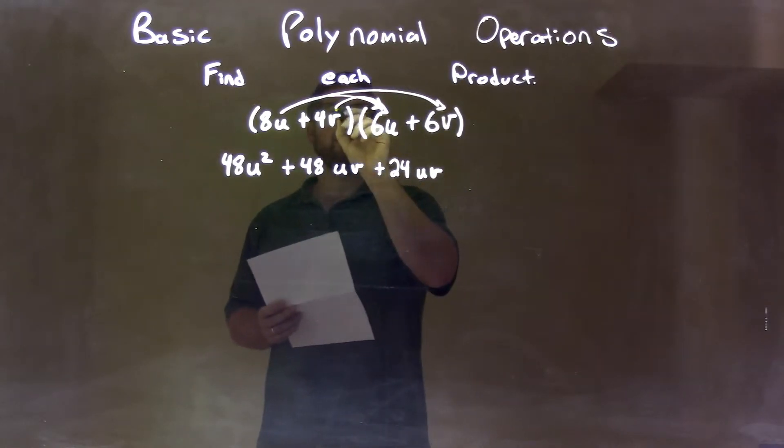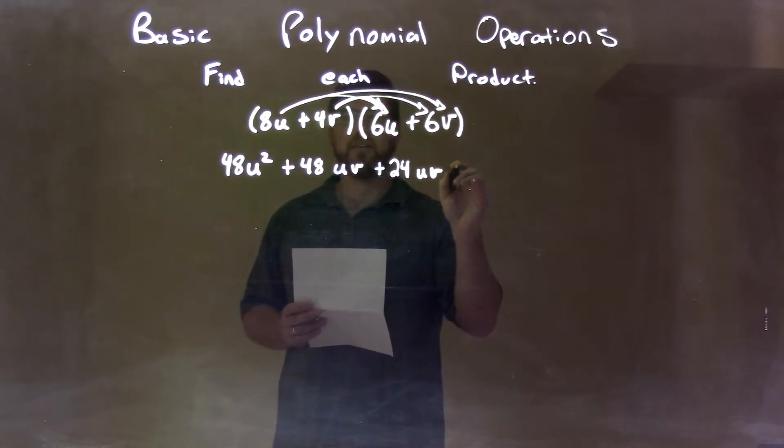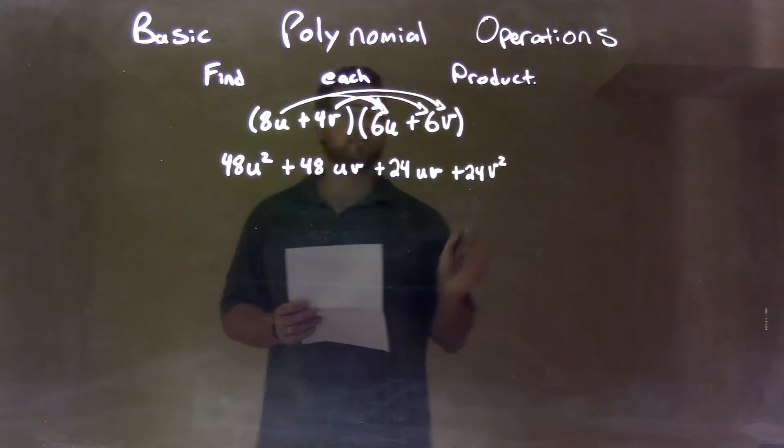And then lastly, we have 4v times 6v, which is 24v squared.